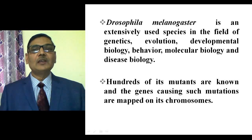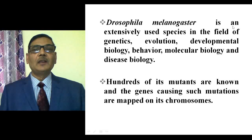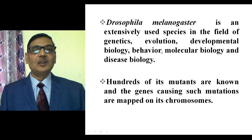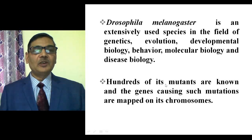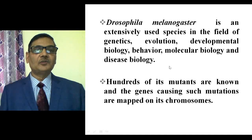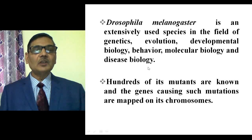Drosophila melanogaster is a popular and extensively used species in the fields of genetics, evolution, developmental biology, behavior, molecular biology, and disease biology. Hundreds of its mutants are known, and the genes causing such mutations are mapped on its four pairs of chromosomes. The location of all such mutant genes on the autosomes and X chromosomes is well known.